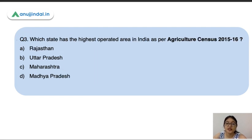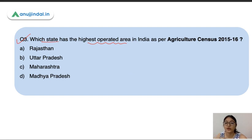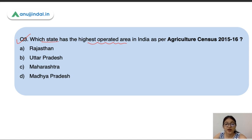Question 3: Which state has the highest operated area in India as per Agriculture Census 2015-16 — that is, which state has the maximum area under agriculture use? The correct answer is Rajasthan, followed by Uttar Pradesh, Maharashtra, and Madhya Pradesh.